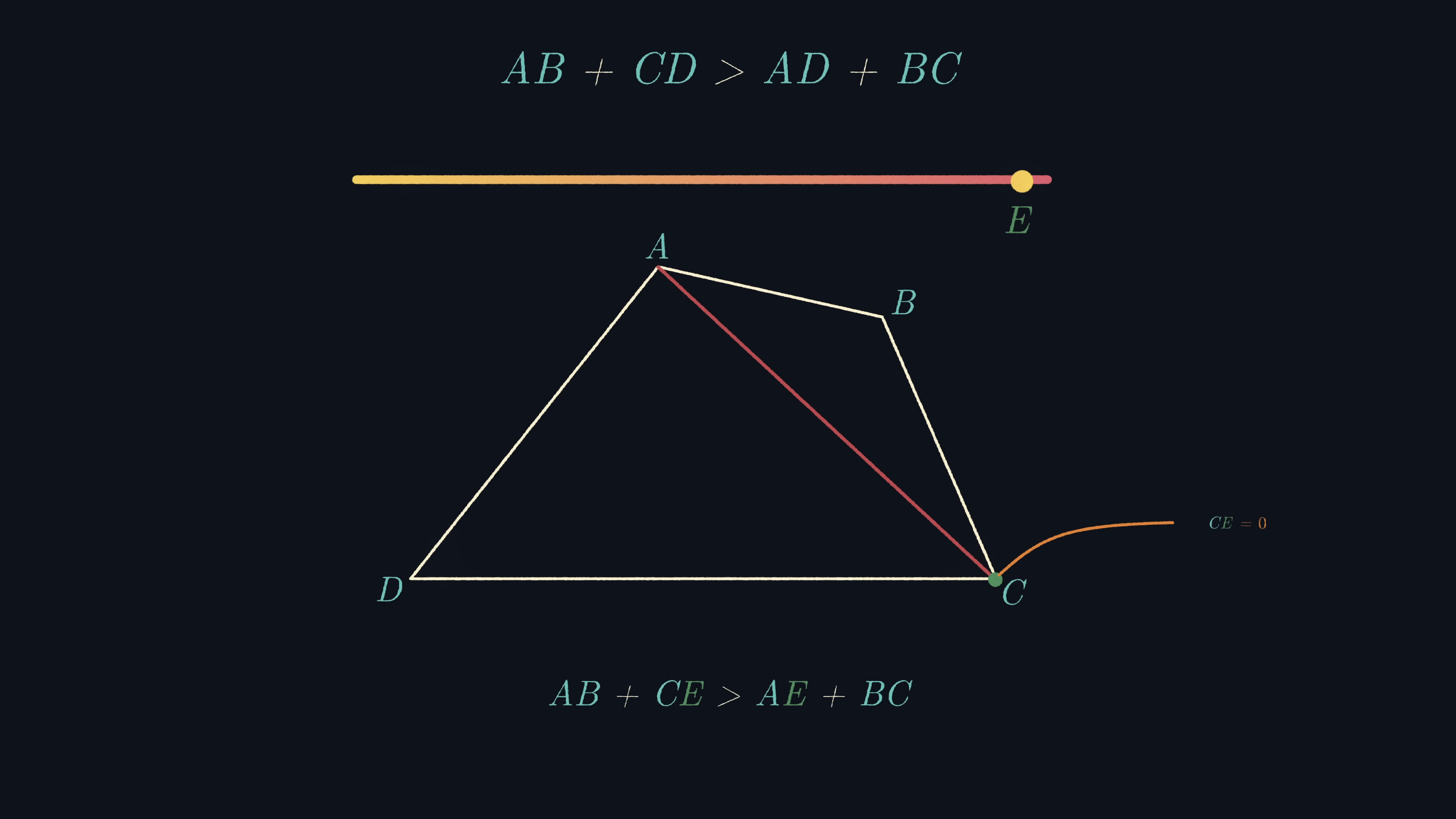Now, the line segment CE equals 0 and we're left with the triangle ABC. The triangle inequality states that the sum of the two sides of a triangle is always greater than the third side of the triangle. Hence, AB is less than AC plus BC. However, we can rewrite this as AB plus CE is less than AE plus BC using the fact that E and C coincide, so the segment CE equals 0.